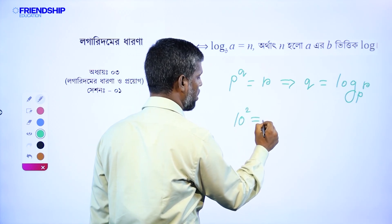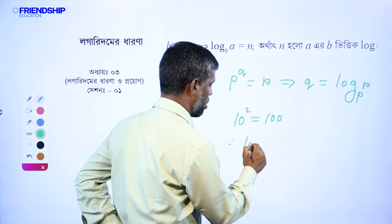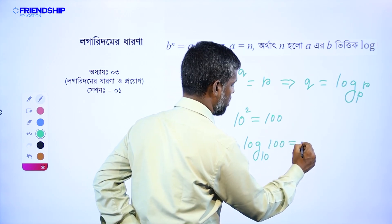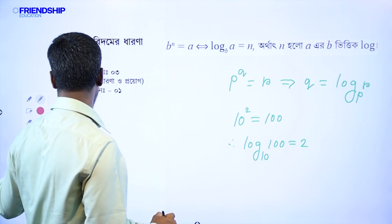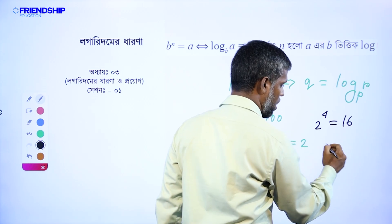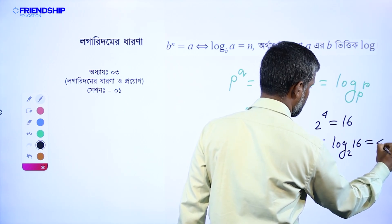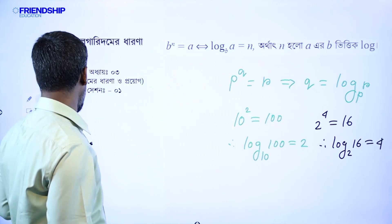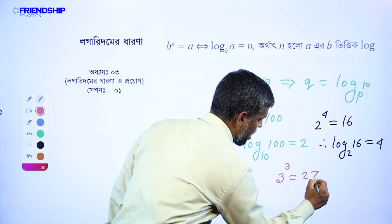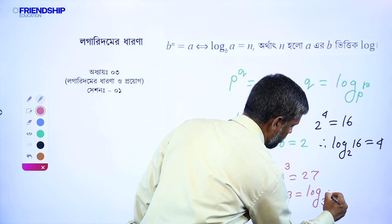I am going to tell you: 10 square is equal to 100. Therefore, log 10 base 100 is equal to 2. 2 to the power 4 is equal to 16. So, log 2 base 16 is equal to 4. 3 cube is equal to 27. So, 3 is equal to log 3 base 27.